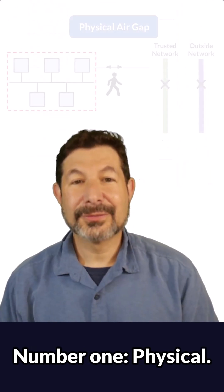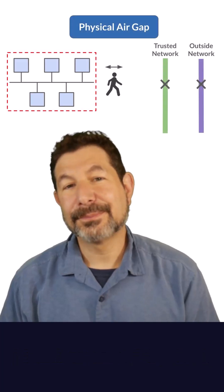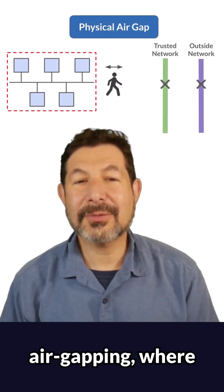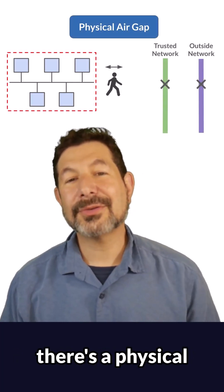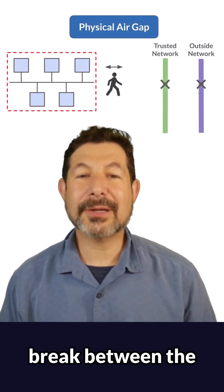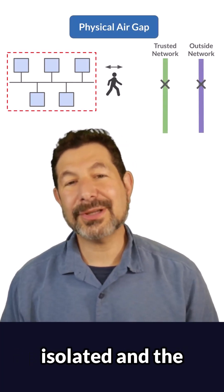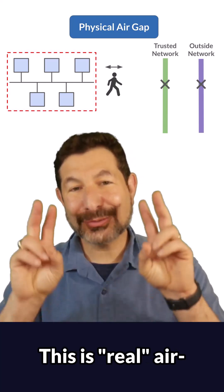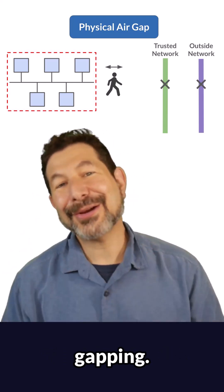Number one: physical. This is the most restrictive type of air-gapping, where there's a physical break between the isolated and the trusted network. This is real air-gapping.